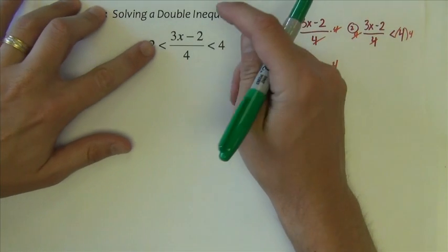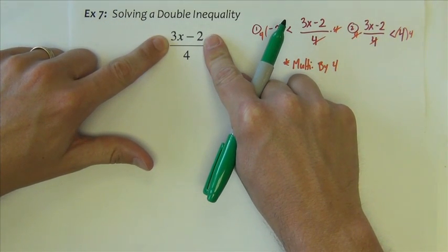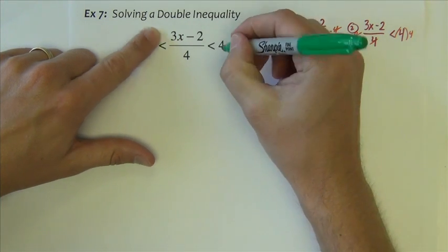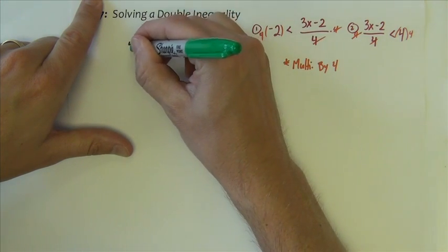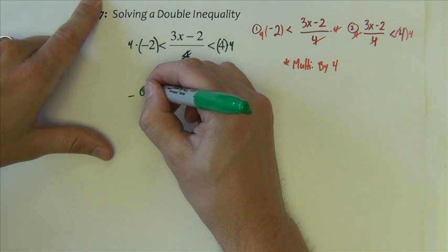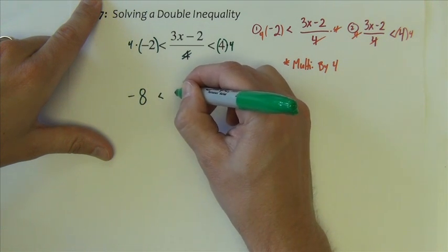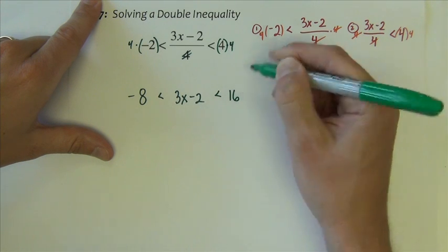So I know I'm trying to solve for x. The x is being divided by 4. So the first thing I'm going to do is undo that divide by 4. So I multiply both sides by 4, and that cancels it out. So we end up with negative 8 less than 3x minus 2 less than 16.